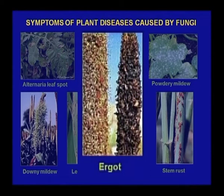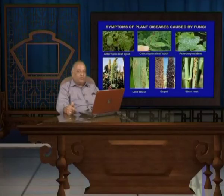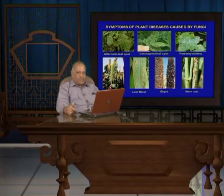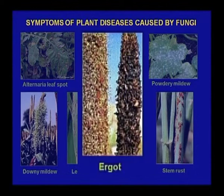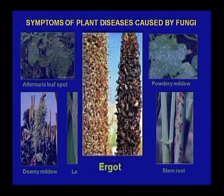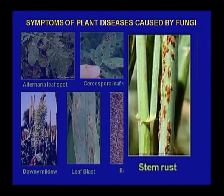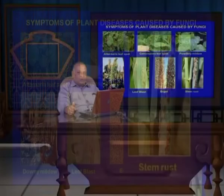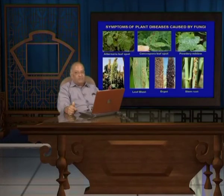Thirdly, it is ergot, which caused great havoc in the 1970s due to its poisonous alkaloids. By consuming those alkaloids, so many livestock and human beings also suffered due to toxicity. Ergot has two types of symptoms: the honeydew symptom and the sclerotial symptom, which are shown in the slide. And lastly, stem rust, which caused great havoc in wheat-growing areas and is still a great enigma for breeders as well as plant pathologists. It is caused by Puccinia tritici.